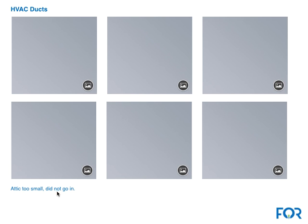If the attic is too small to enter — for example, a flat roof or a roof with a low pitch — you may not be able to access the duct lines. But even in that case, we can still get pictures of leaky ducts.